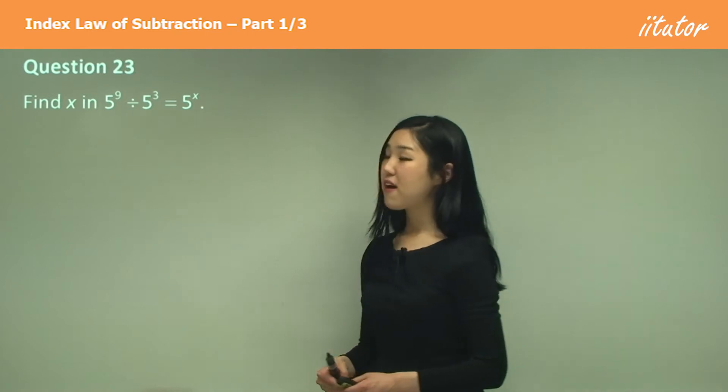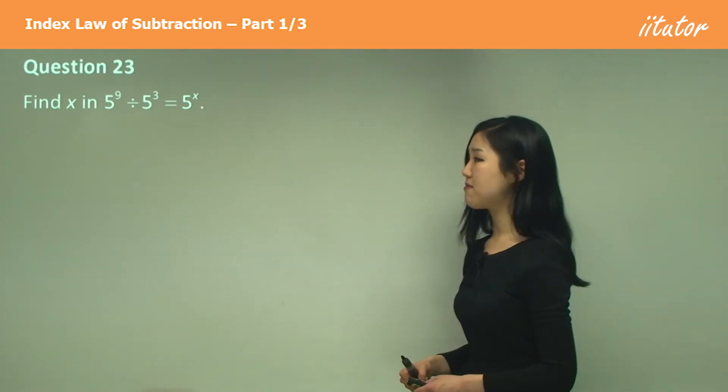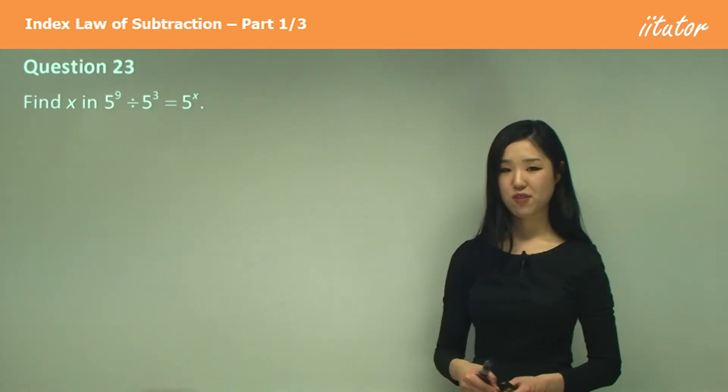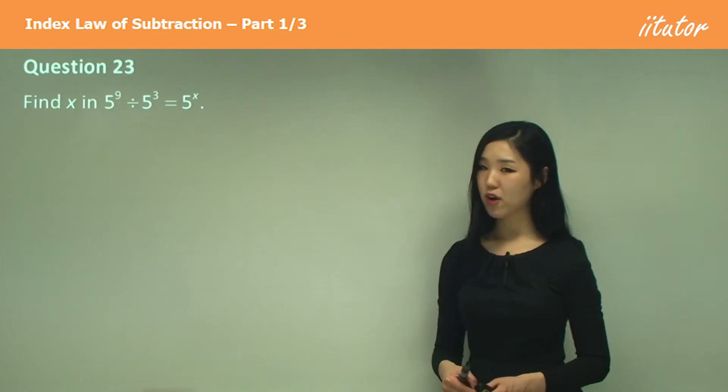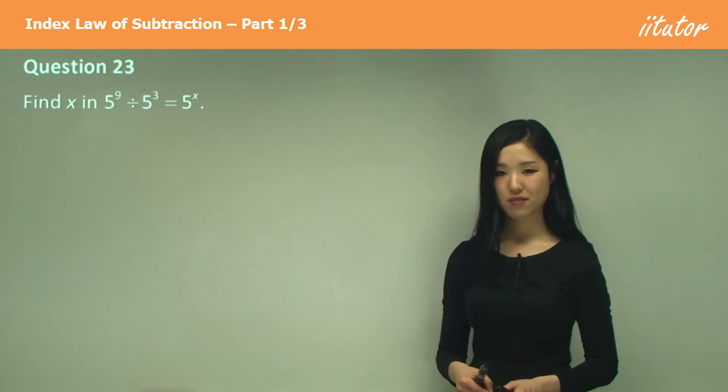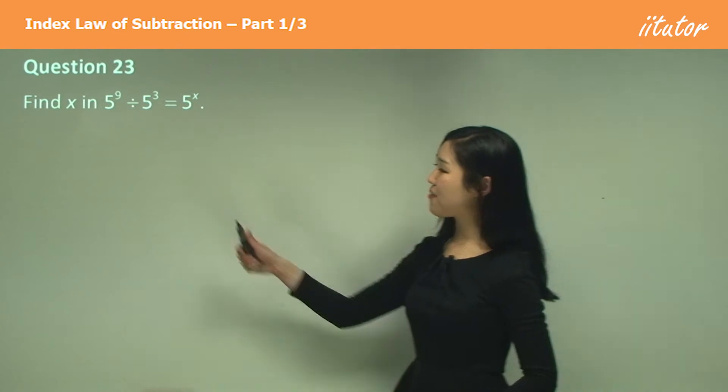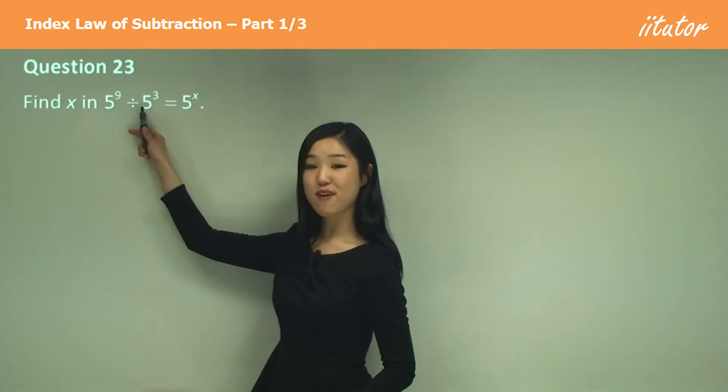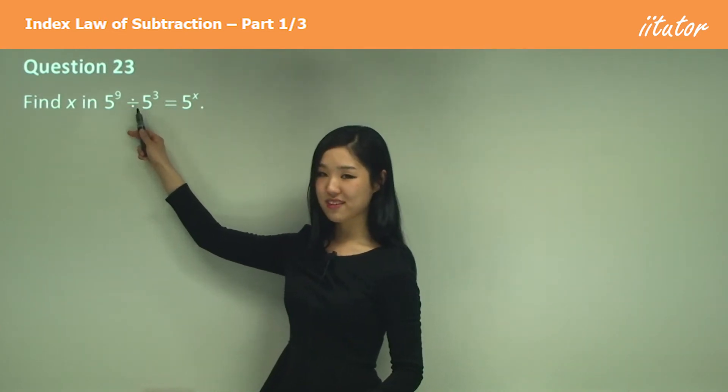Find x in 5 to the power of 9 divided by 5 to the power of 3 equals 5 to the power of x. Now concentrate on your left-hand side. Let's simplify the left-hand side first. Because they have the same base and we're dividing, what do we do with the indices?